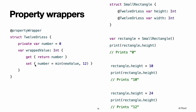Note: the declaration for number in the example above marks the variable as private, which ensures number is used only in the implementation of TwelveOrLess. Code written anywhere else accesses the value using the getter and setter for wrappedValue and cannot use number directly. For more information about private, see access control. You apply a wrapper to a property by writing the wrapper's name before the property as an attribute.